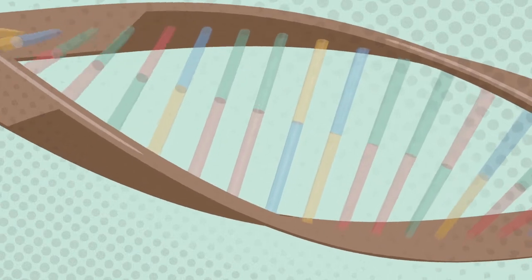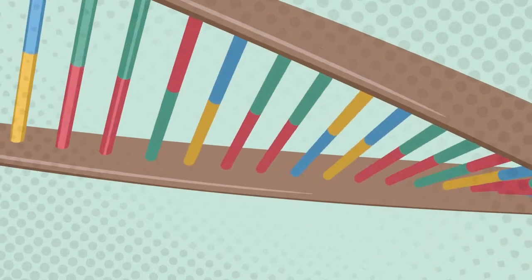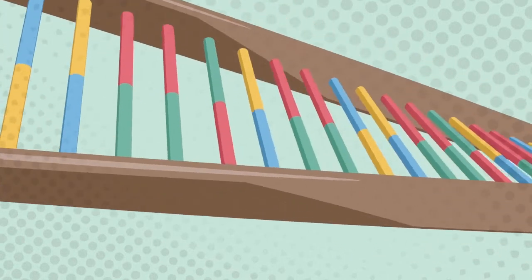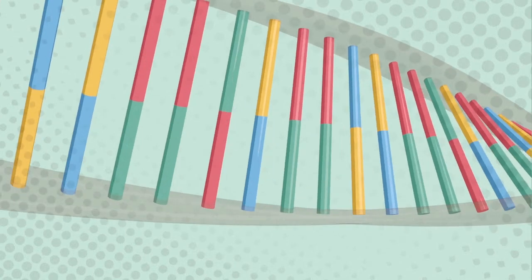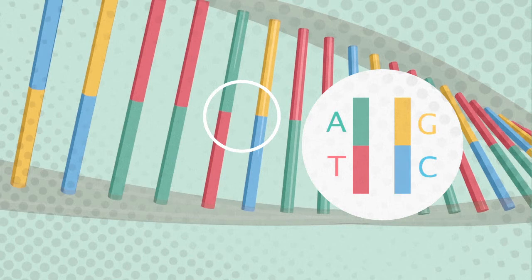DNA comprises intertwined strands made up of sugar and phosphate with links across the middle. The rungs are base pairs made of four different chemicals represented by the letters A, T, G and C. The letters always come in pairs, A with T and G with C.